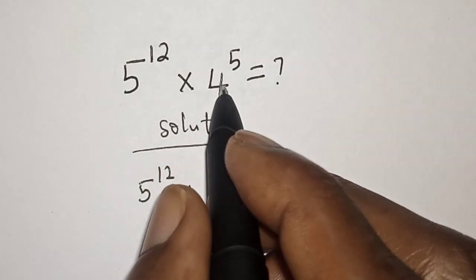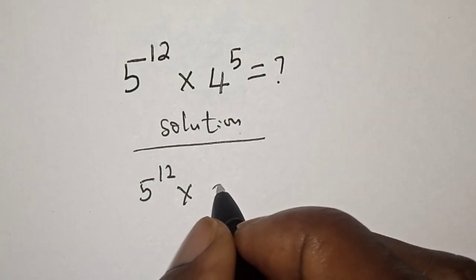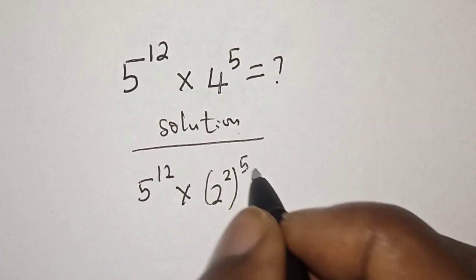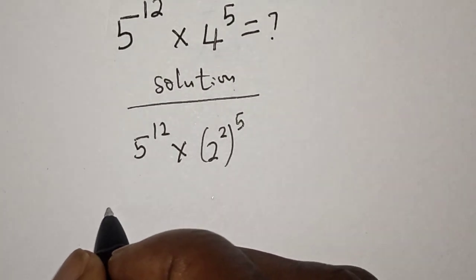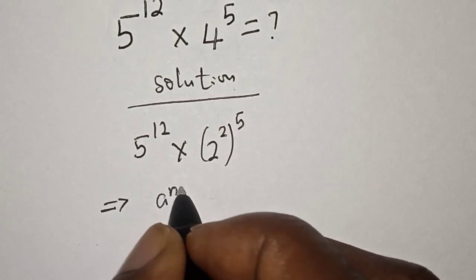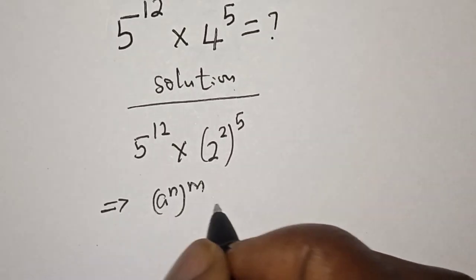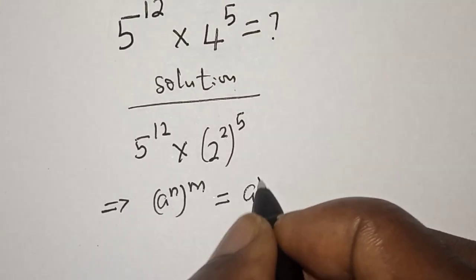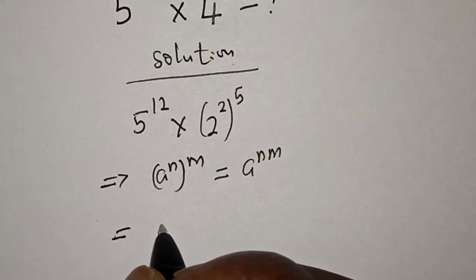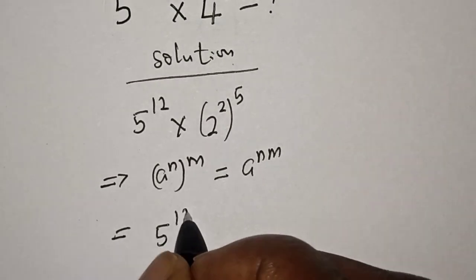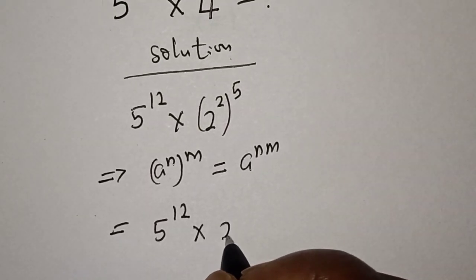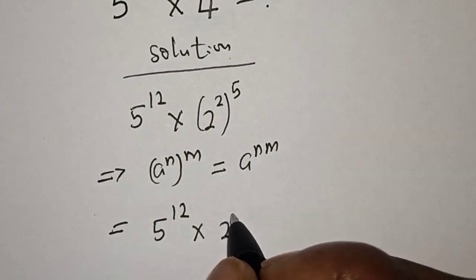...multiplied by 4 raised to power 5 can be written as 2 squared raised to power 5. Remember this rule: a raised to power n, to the power of m, is equal to a raised to power n×m. Then this becomes 5 raised to power 12 multiplied by 2 raised to power 2×5, that is 10.